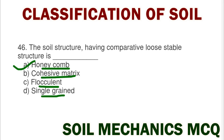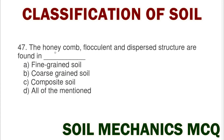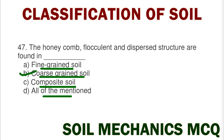Next question: the honeycomb, flocculent, and dispersive structures are found in option A fine grain soil, option B coarse grain soil, option C composite soil, option D all of mentioned. The correct answer is option B coarse grain soil.